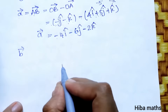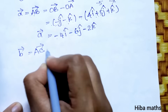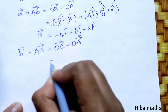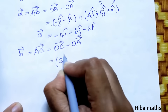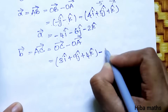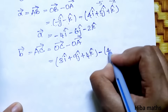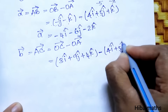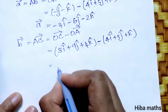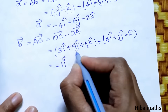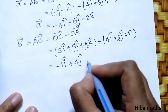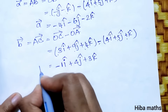AC vector = OC vector minus OA vector. OC = 3i + 9j + 4k, minus OA = 4i + 5j + k. So AC = (3-4)i + (9-5)j + (4-1)k = -i + 4j + 3k. This is the AC vector.